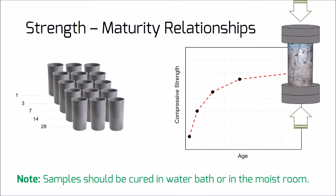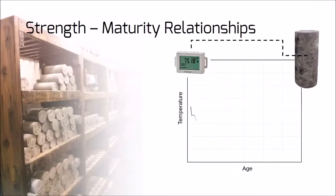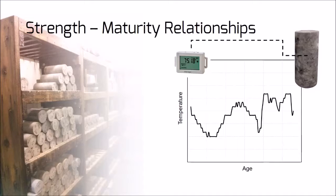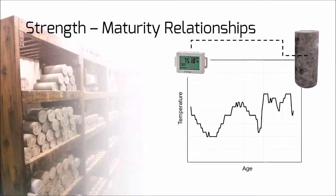At each test age, two samples should be tested. If the results vary more than 10% from the average value, the third sample will be tested. The temperature variation should be monitored during the curing period. This can be achieved by implementing temperature sensors within the concrete cylinders. ASTM C1074 requires time intervals of 30 minutes or less for the first 48 hours and 60 minutes or less afterwards. One should also determine the datum temperature, and the procedure for calculating it is well described in the standard.